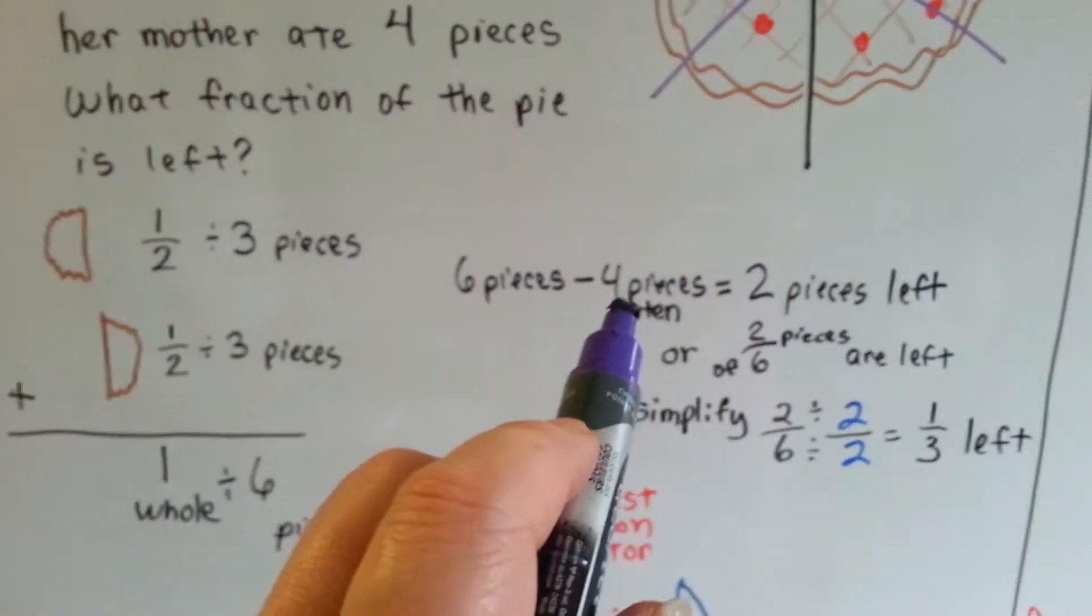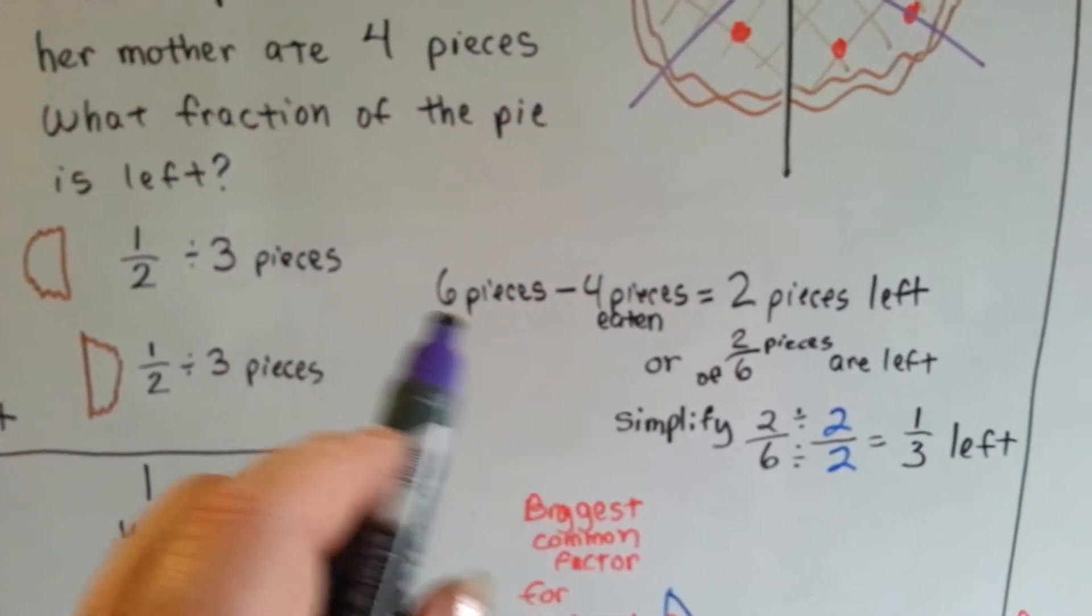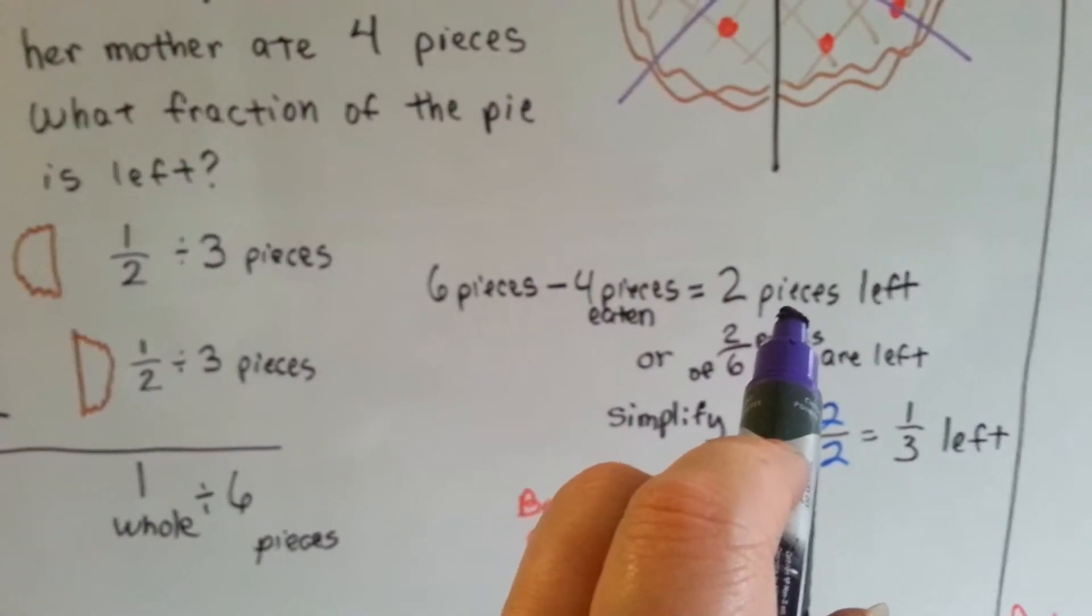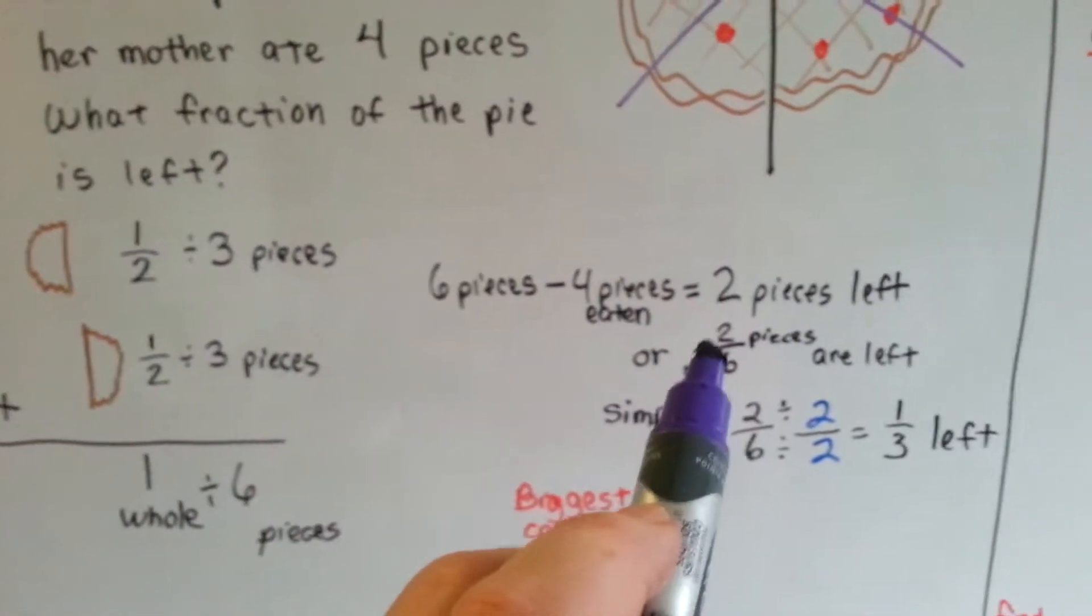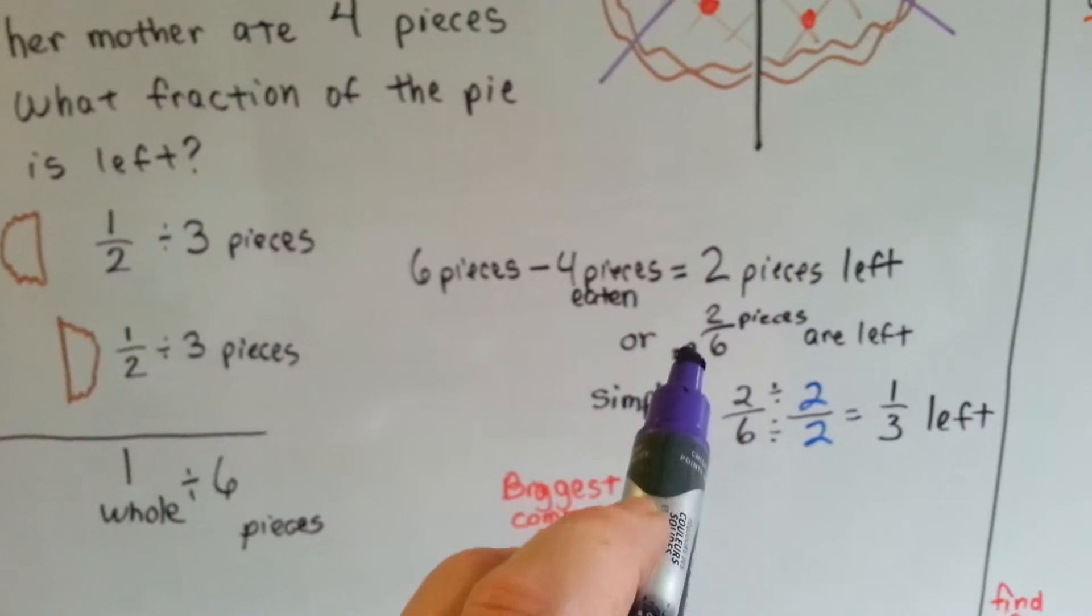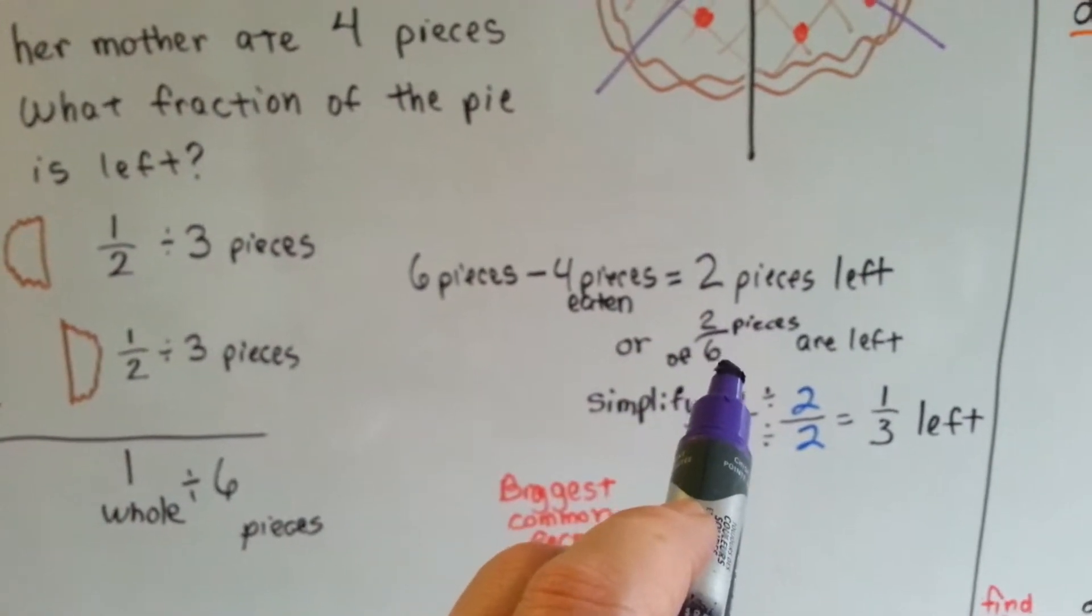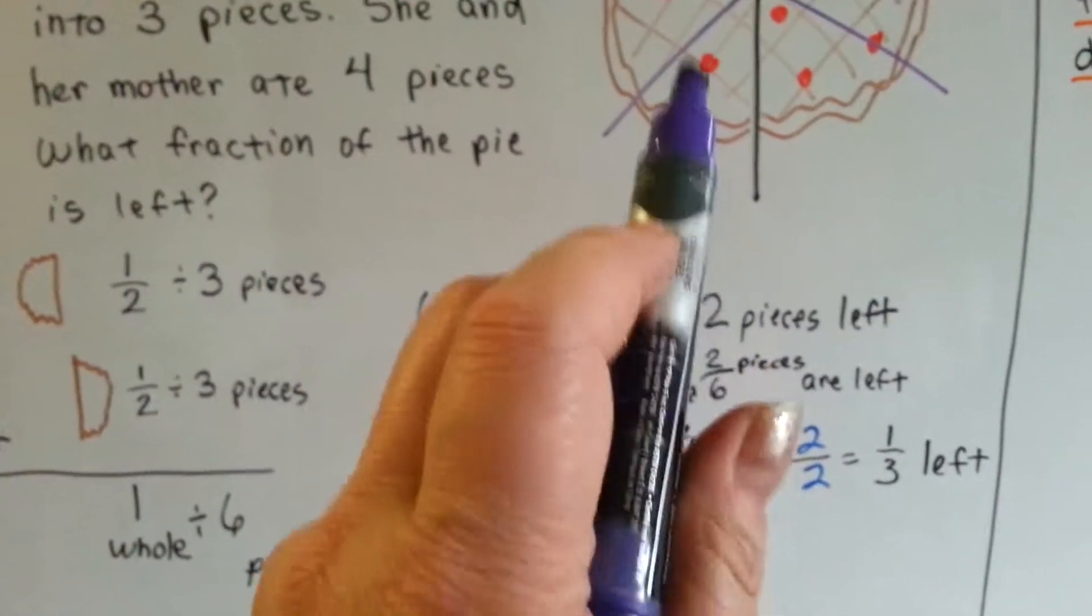Of those six pieces, four were eaten. So that means two were left over, right? We now have left two pieces of the six. We have two pieces left of the original six.